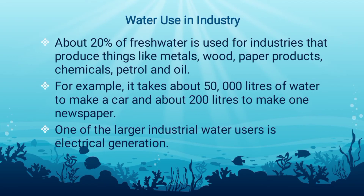Water use in industry. About 20% of freshwater is used for industries that produce things like metals, wood, paper products, chemicals, petrol, and oil. Probably every manufactured product uses water during some part of the production process. Industrial water use includes water used for purposes such as fabricating, processing, washing, diluting, cooling, or transporting a product, incorporating water into a product, or for sanitation needs within the manufacturing facility. One of the larger industrial water users is electrical generation.